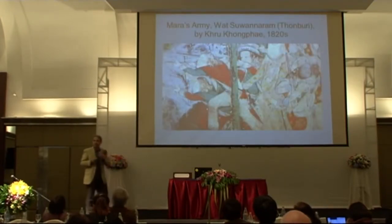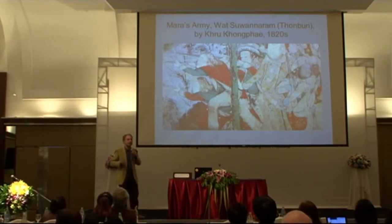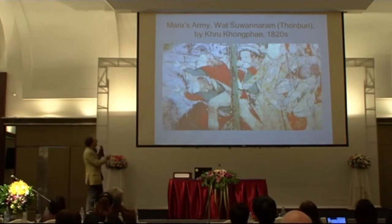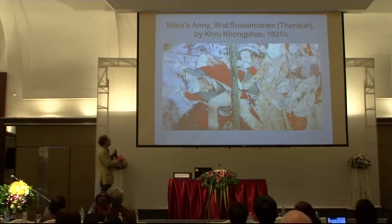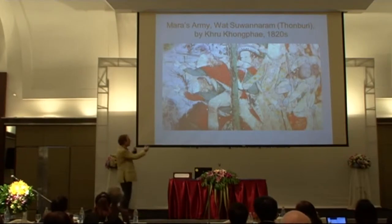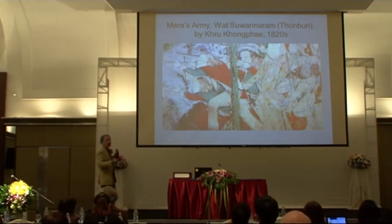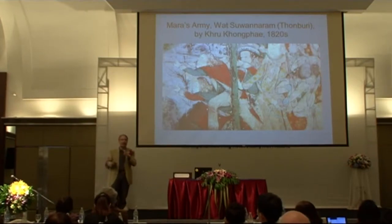Let me explore another very common iconographic motif in the murals that represent the Thosachand. These are the foreigners that always appear in the scene of the army of Mara, the enemy of the Buddha, who attack the Buddha and are always defeated. There are many representations of this kind in Thai murals all over Thailand.